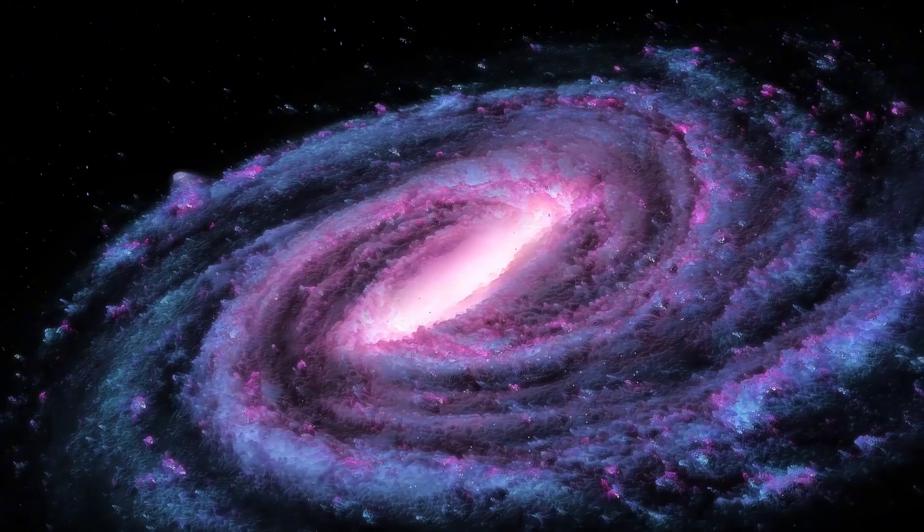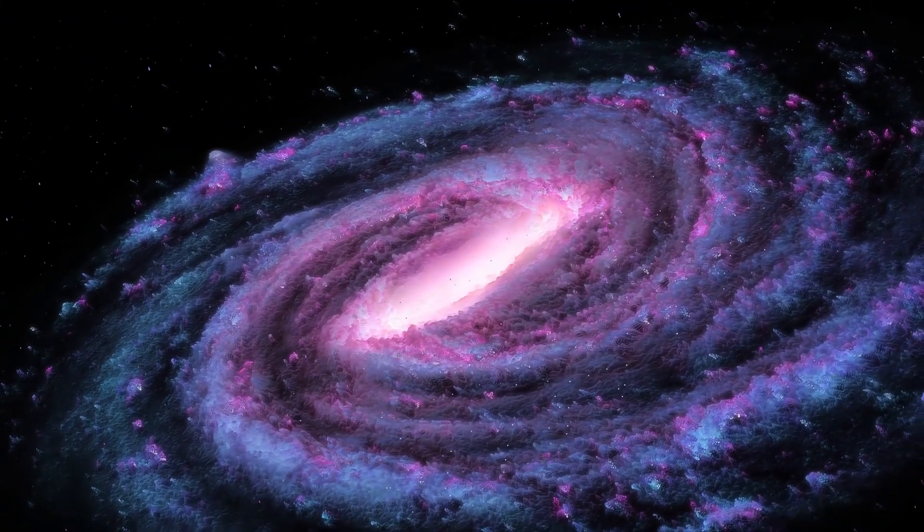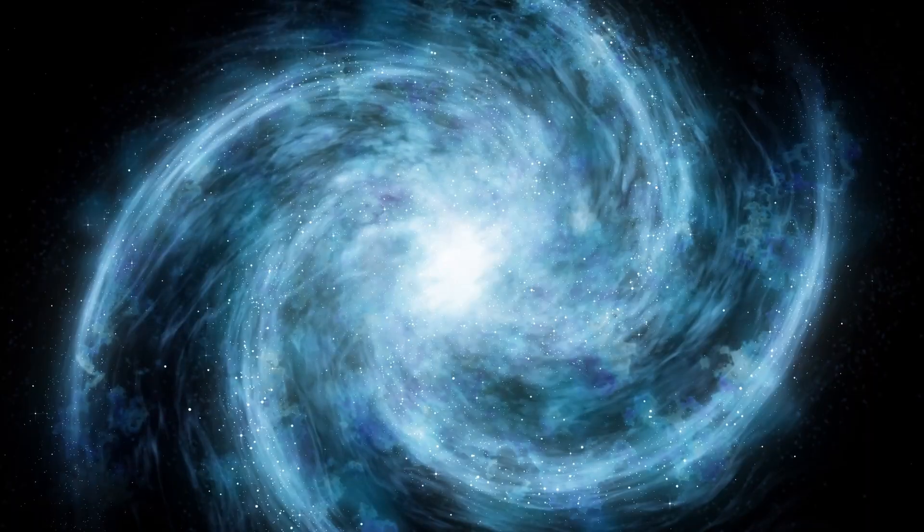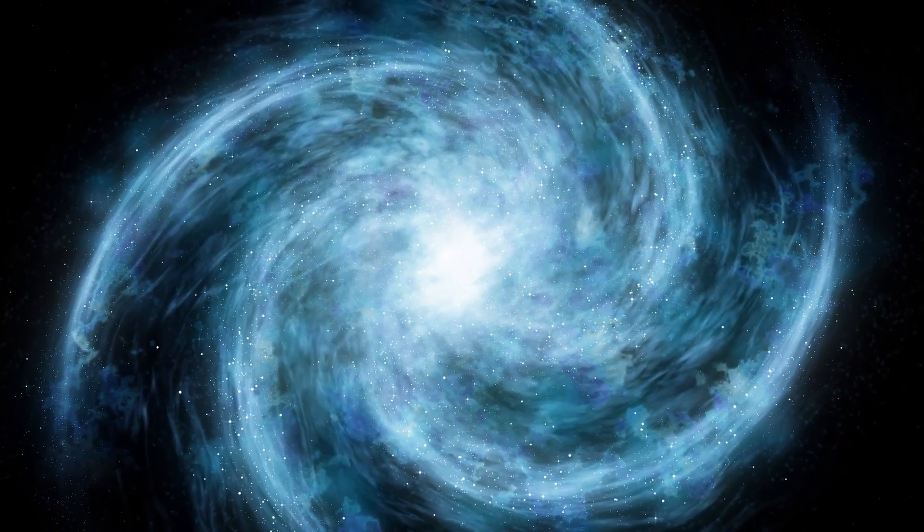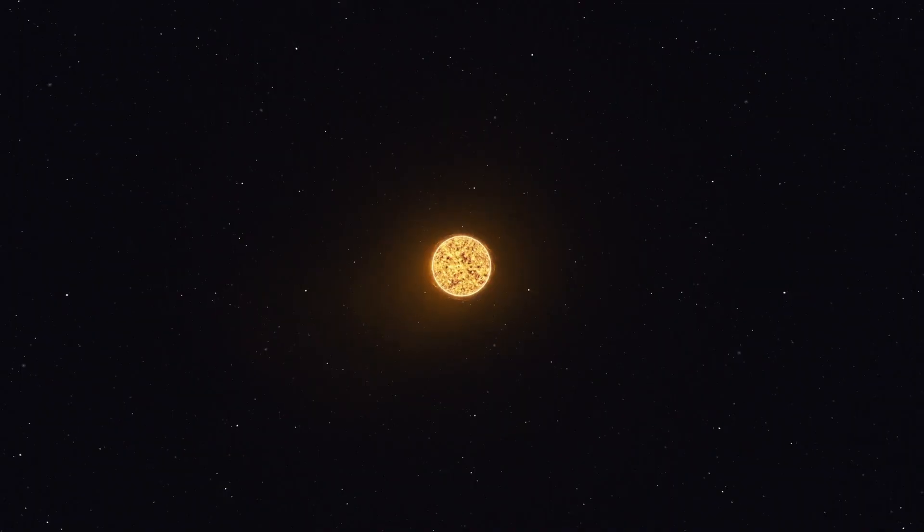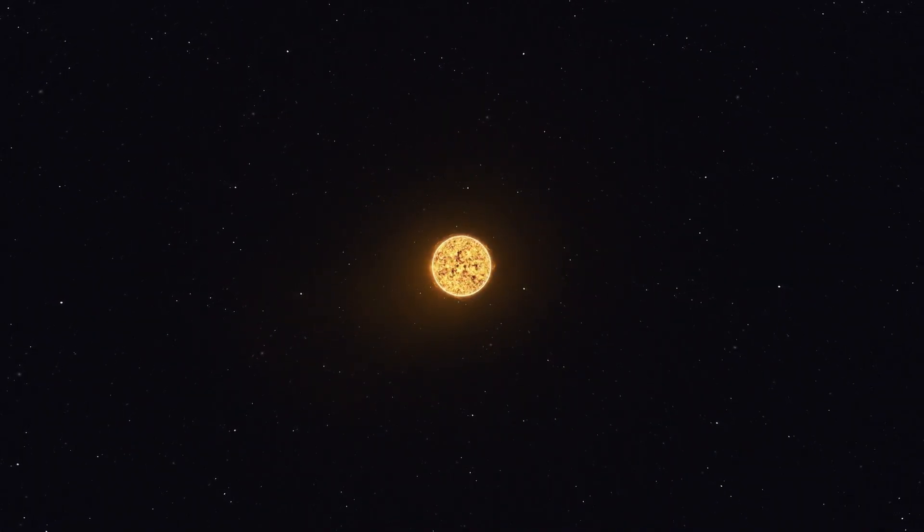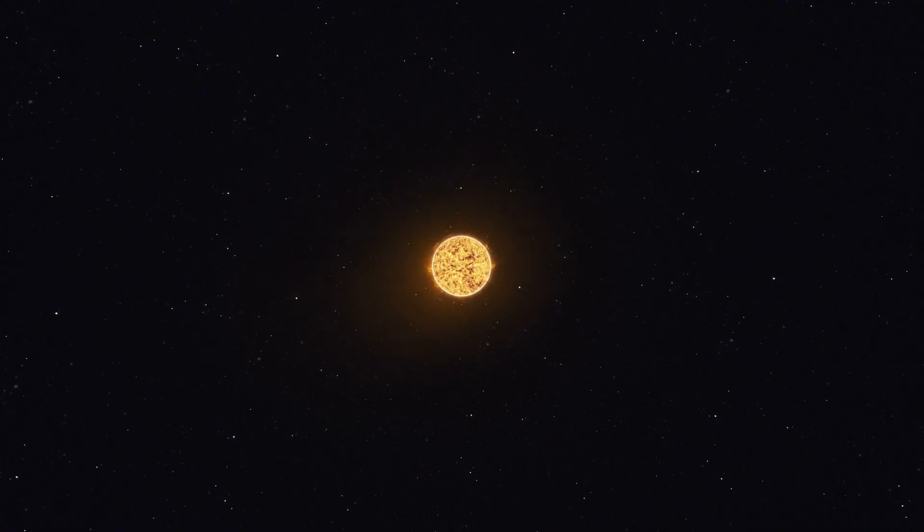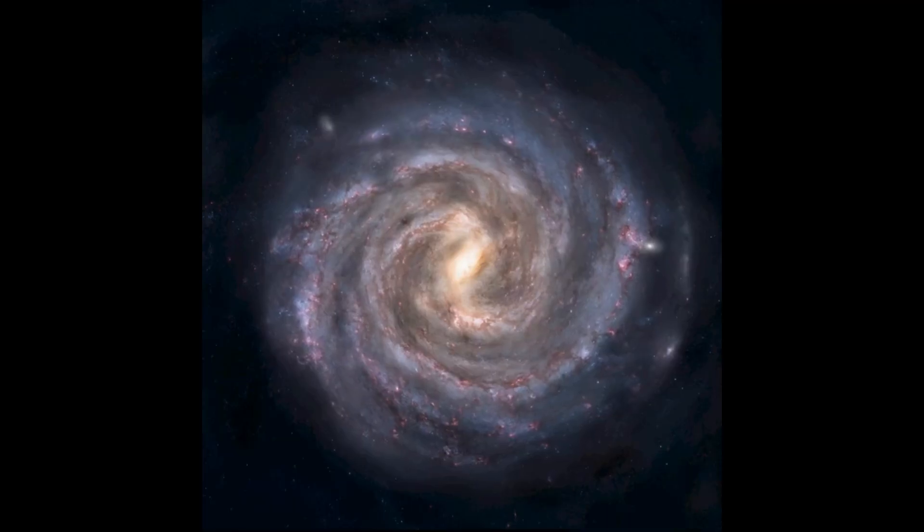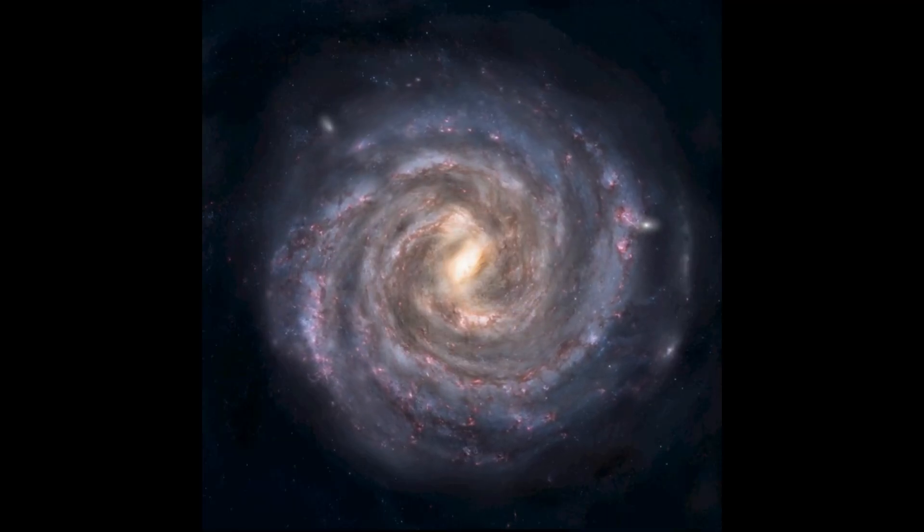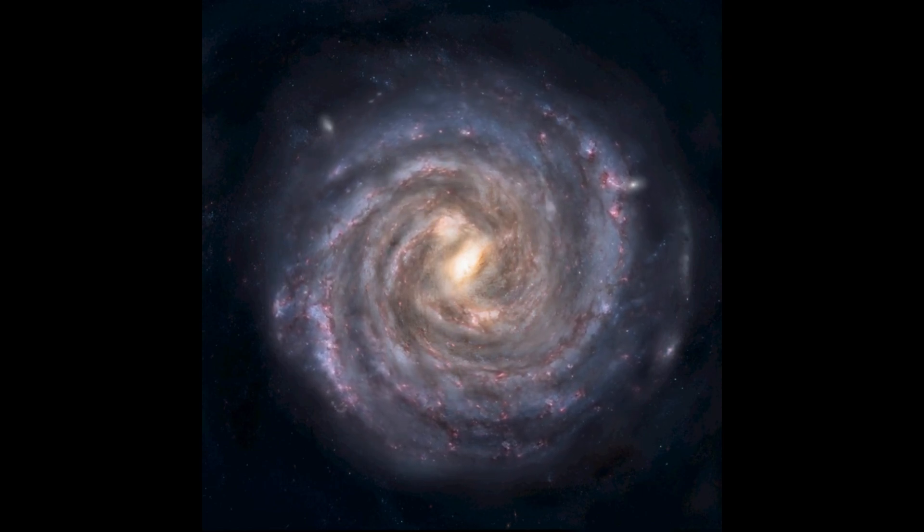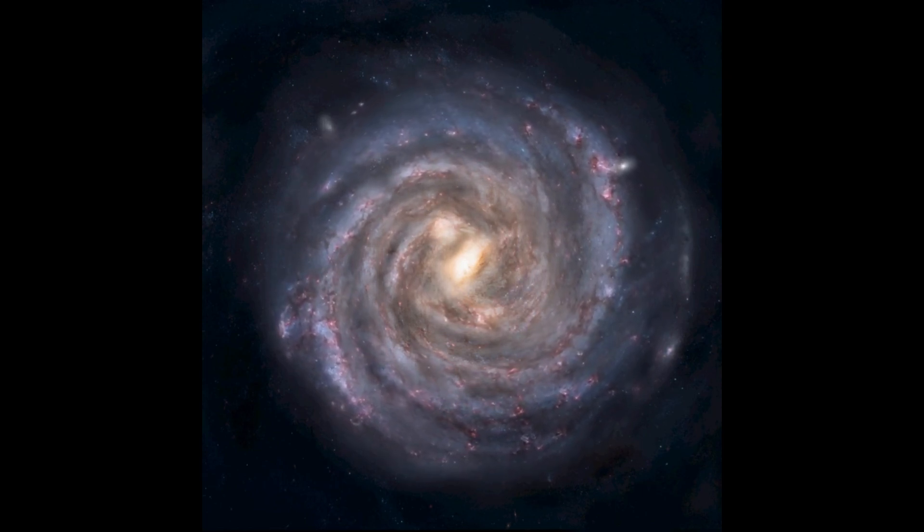The Sun has a radius that is around 764 times smaller than Betelgeuse. If this star replaced our Sun in the solar system, it would reach past the asteroid belt and even beyond Jupiter, suggesting that Earth, Mars, Venus, and Mercury would all be completely absorbed. Betelgeuse is 16,128 times as massive as the Sun and has 126,000 solar luminosities, making it visible from 548 light-years away.